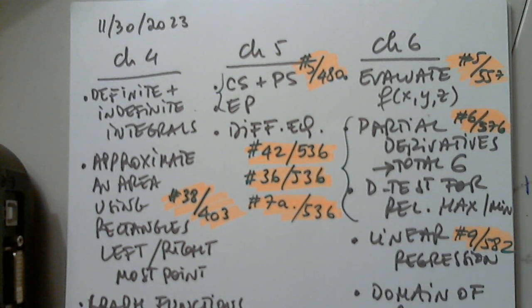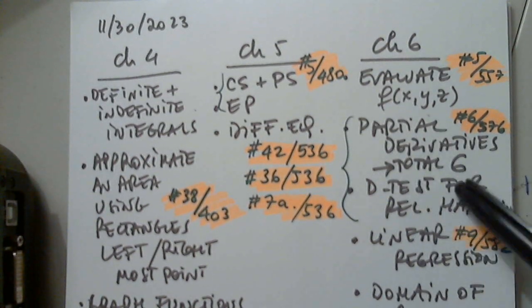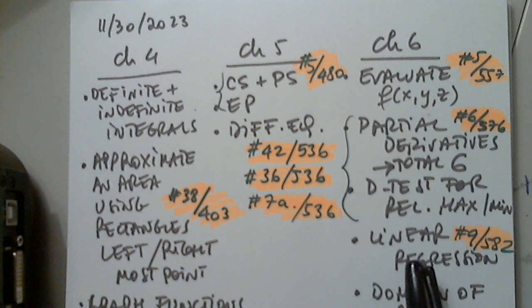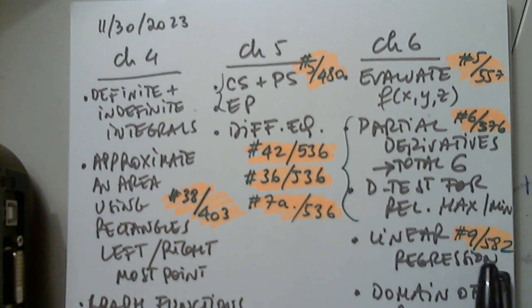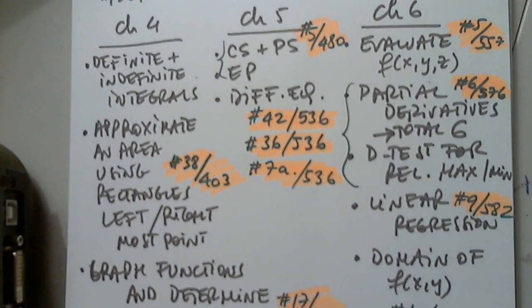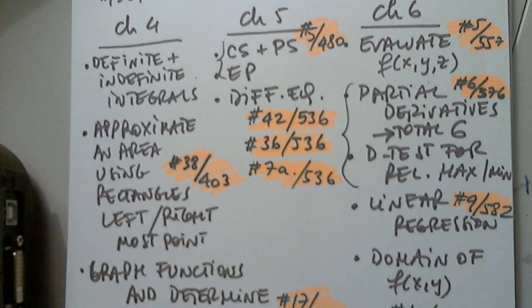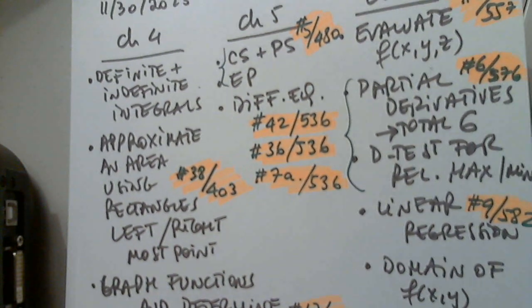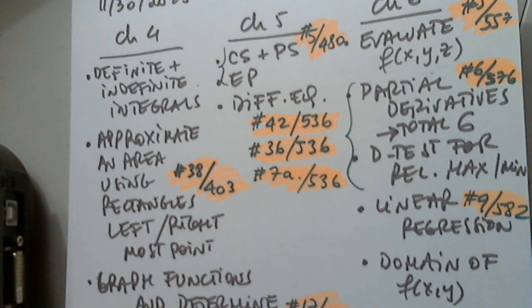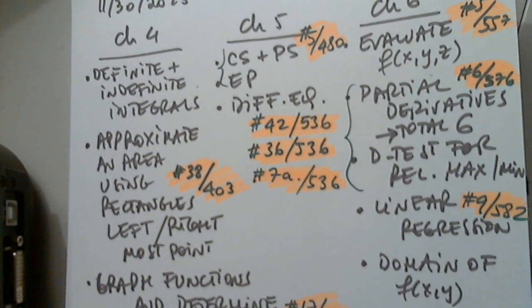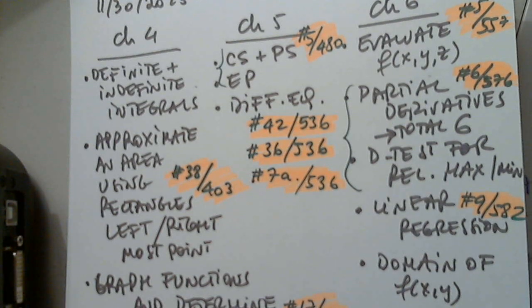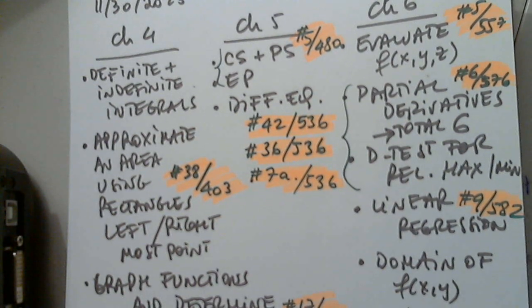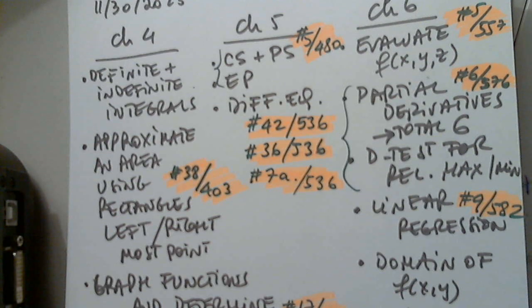For chapter six, to evaluate a function, finding the relative max, relative min, what we did last time, a simple example with a graphing calculator on linear regression, and one example for domain. What would you like to start with?